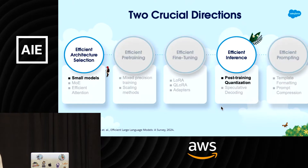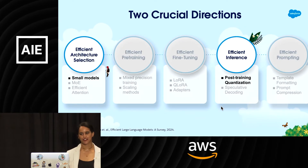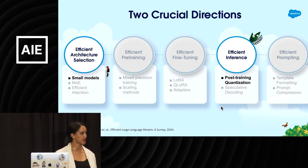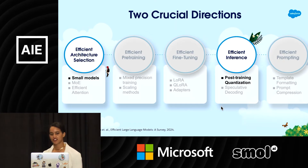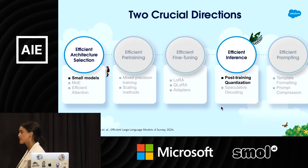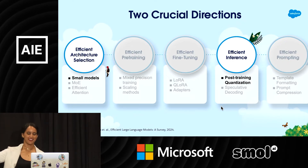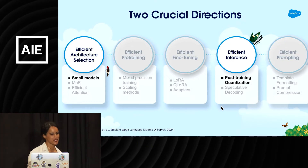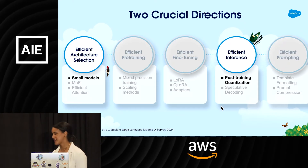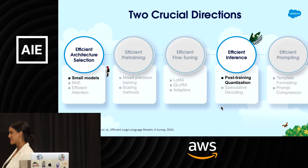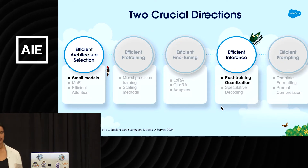With our limited time here today, I'm going to dive into two crucial directions you can take away and apply right away. The first is around efficient architecture selection — the power of small models. The second is efficient inference — specifically, post-training quantization, something you could actually apply at the end of the day on your model.